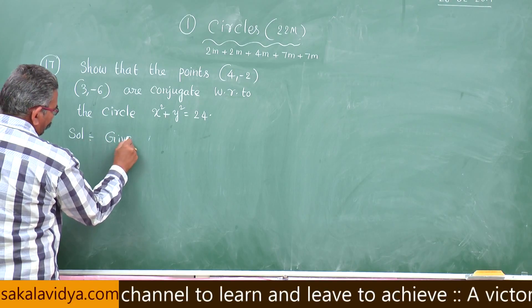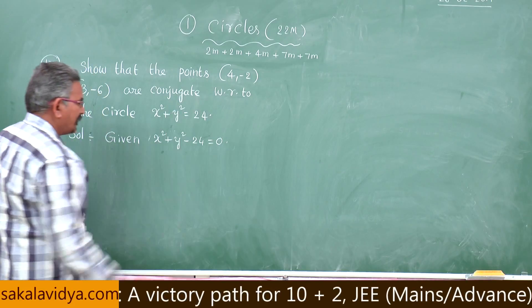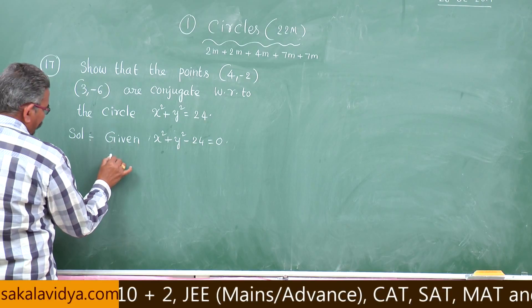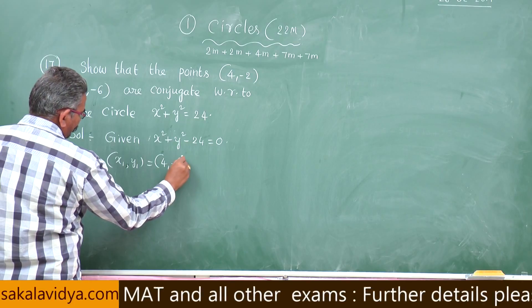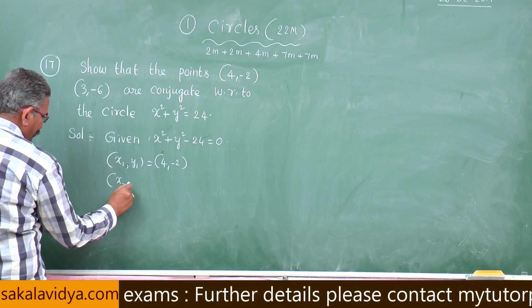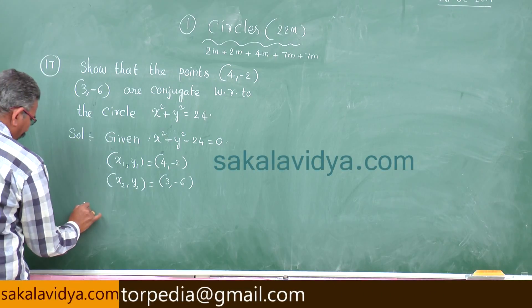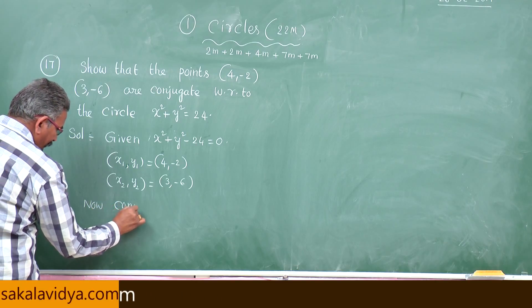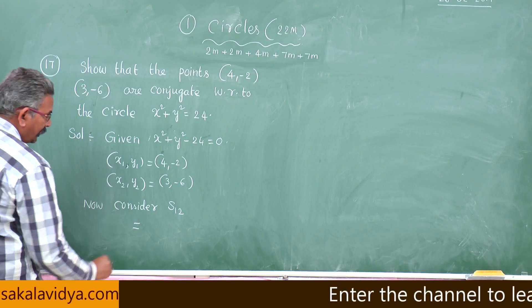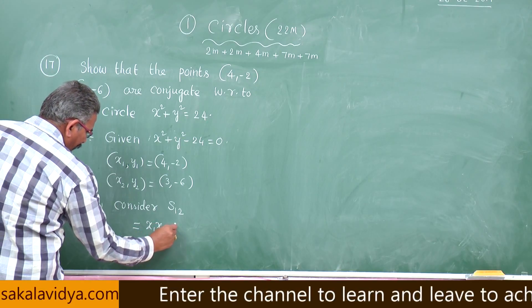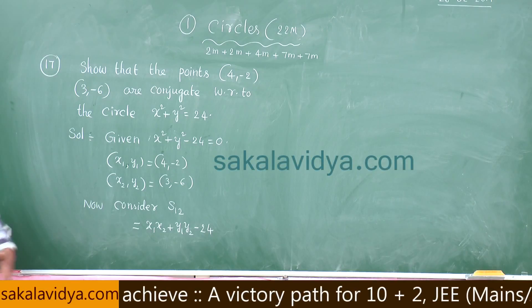Given: x² + y² - 24 = 0, this is s = 0. Given points: let x₁, y₁ = (4, -2) and x₂, y₂ = (3, -6). Now consider s₁₂.